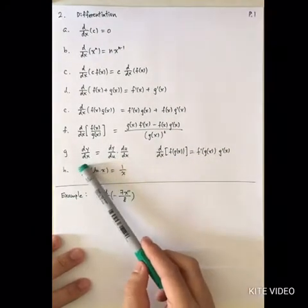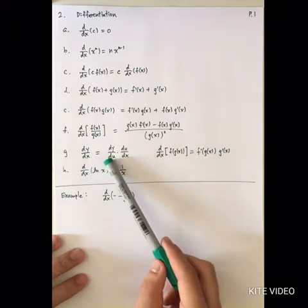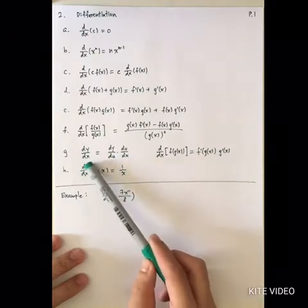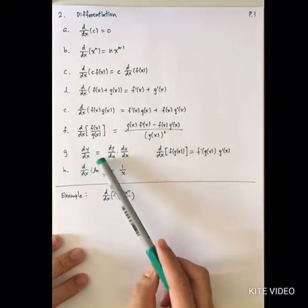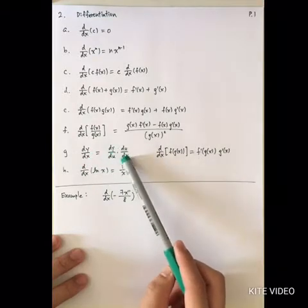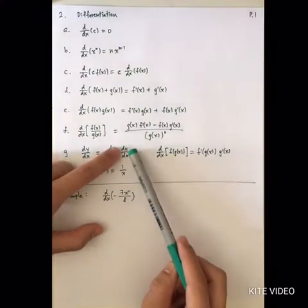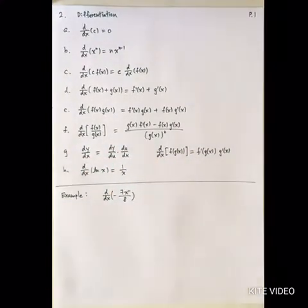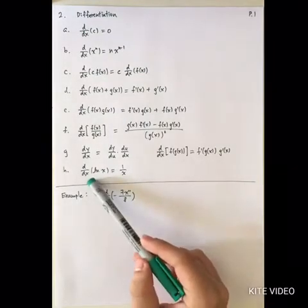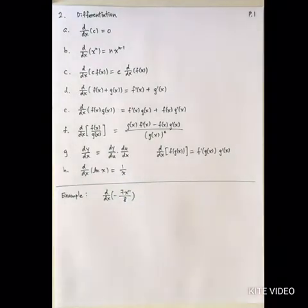Then divide by the square of the denominator. For the chain rule: if y is a function of u and u is a function of x, then dy/dx equals dy/du multiplied by du/dx. Finally, for the log rule, if you differentiate log x with respect to x, it is equal to 1 divided by x.